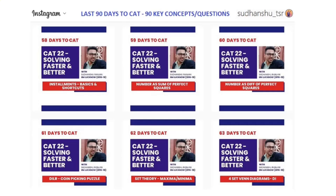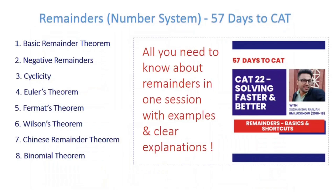Hi friends, hello and welcome to the last 90 days to CAT. In the last few parts we've done installments expressing numbers as sum of perfect squares and difference of perfect squares. In this part we are talking about one very important aspect for CAT which is remainders. We'll be covering eight key topics: basic remainder theorem, negative remainders, cyclicity, Euler's theorem, Fermat's theorem, Wilson's theorem, Chinese remainder theorem, and binomial theorem. By the end of this video your remainders topic should be complete.